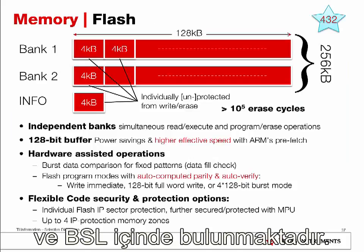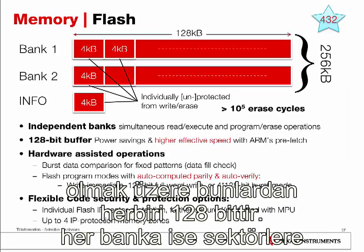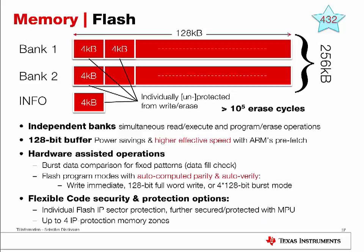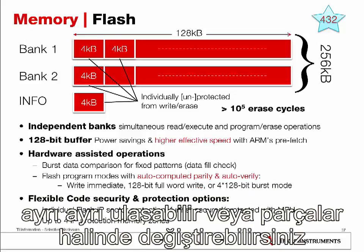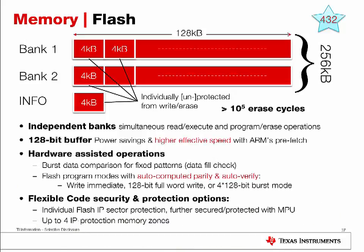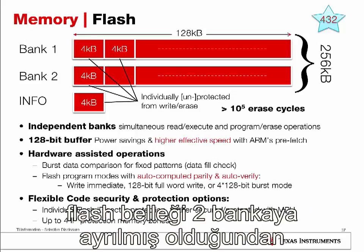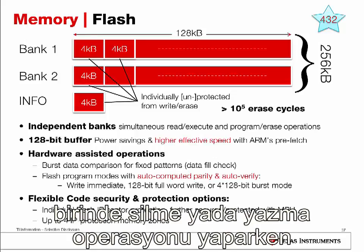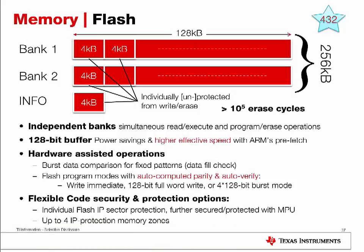Starting off with flash, the flash architecture on MSP432 has the flash broken up into two banks, each with 128 KiloBytes. The flash memory is also organized into sectors, with each sector size being 4 KiloBytes. This allows you to individually control, protect, or unprotect each sector from any erase or write operation. This can become quite handy when you need to perform a mass erase on your whole memory while still individually protecting certain flash sectors. Since the flash memory is organized into two independent banks, developers can simultaneously read or execute from one bank while performing an erase or program operation on another.